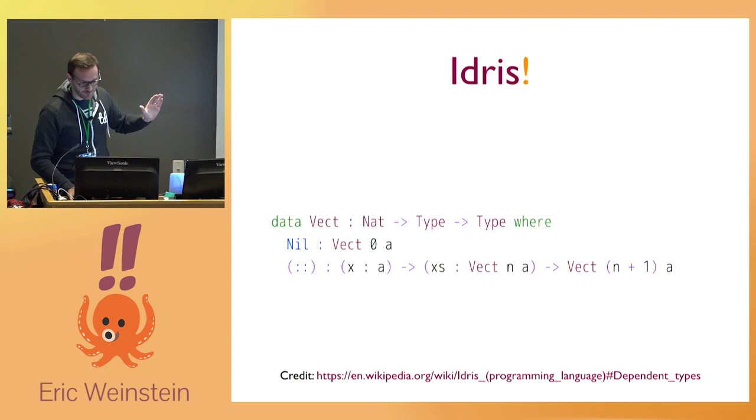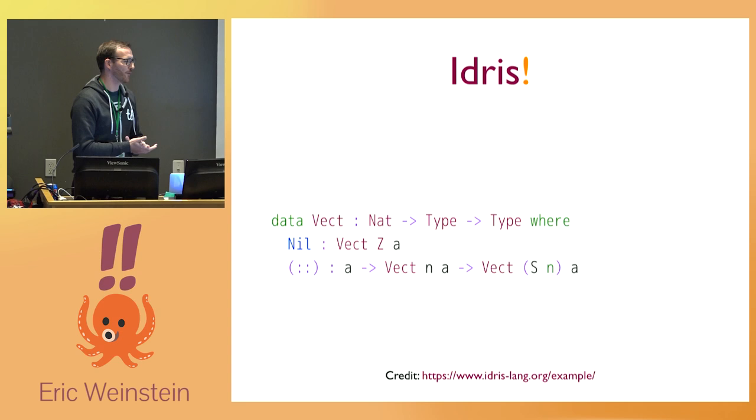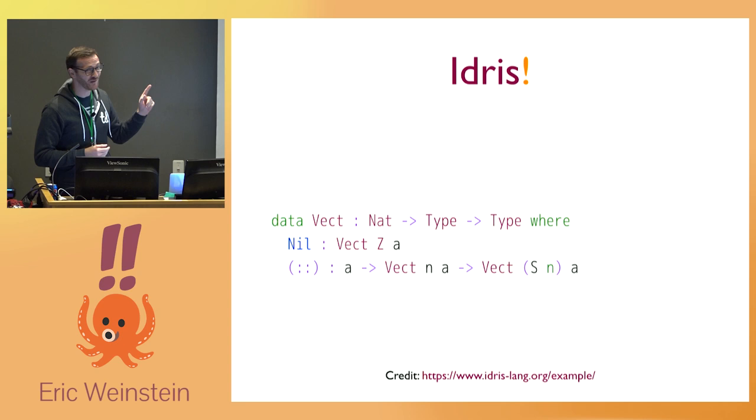If you look at the Idris language website at idrislang.org/examples, they use Z and S for zero and successor, but the idea is the same. If you have a vector of A's of some length n and you add one more, you now have a vector of A's that is one larger than before. The fact that the type system can tell you this is really amazing.